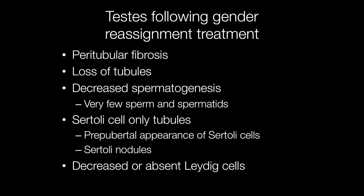Histological changes include peritubular fibrosis with reduction in the number of tubules present, decreased spermatogenesis with very few, if any, sperm and spermatids, Sertoli-cell-only tubules, and a prepubertal appearance of Sertoli cells with formation of Sertoli nodules. In addition, in the interstitium between the tubules, there are decreased or entirely absent Leydig cells.